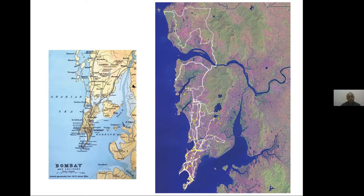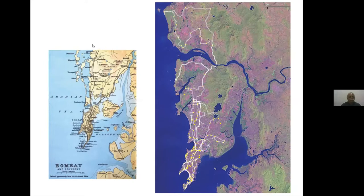Whenever we start talking about Mumbai, we normally think that South Mumbai is the original Mumbai and the suburbs grew later. But that is not true. When people talk about Mumbai in the ancient period — from 1st century BC, 2nd century BC, through the 3rd, 4th, and 5th centuries — they are talking about the area we now know as the suburbs. That was the Sashti, and that was the original Mumbai in the ancient world.